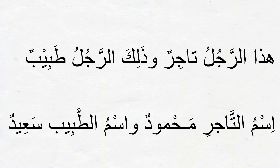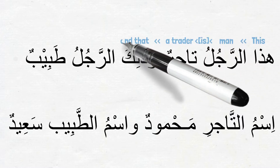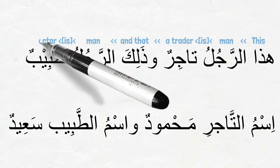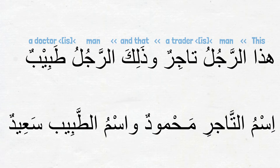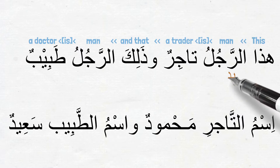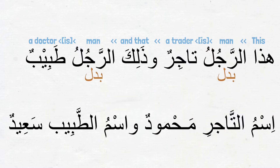هذا الرجل تاجر وذلك الرجل طبيب — This man is a trader and that man is a doctor. Can you help me identify the badals in these two ismiya sentences? الرجل, right? The first الرجل is the badal for هذا, and the second الرجل is the badal for ذلك.